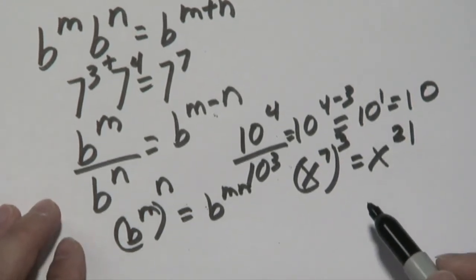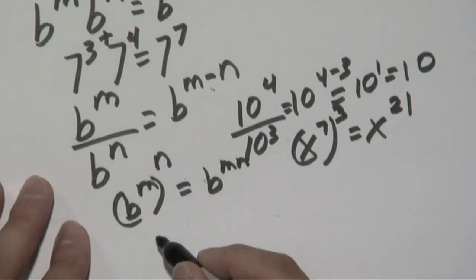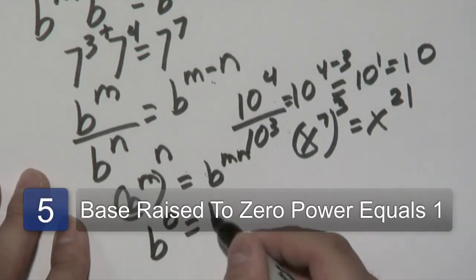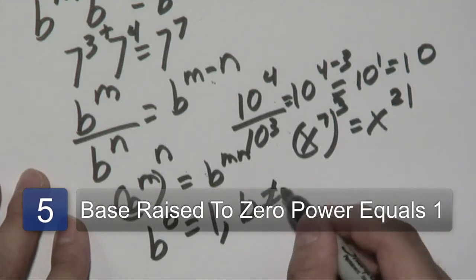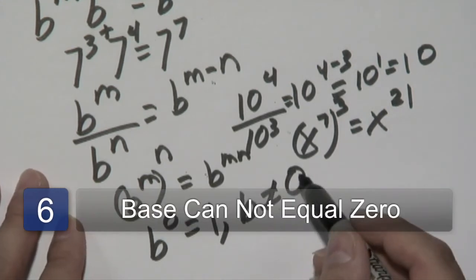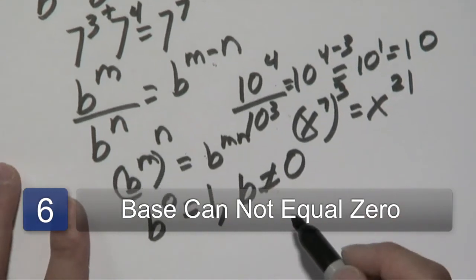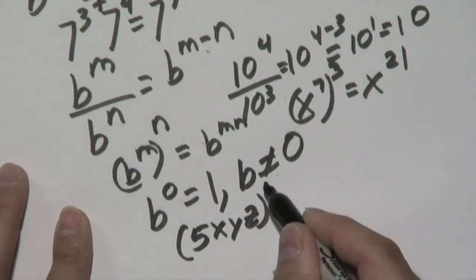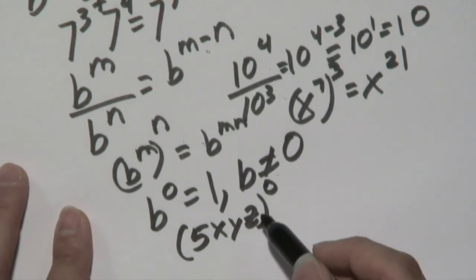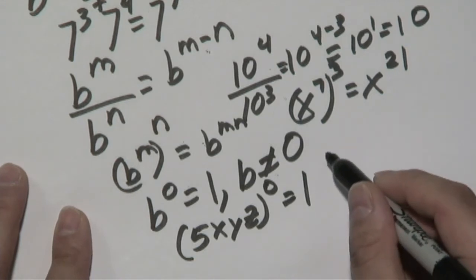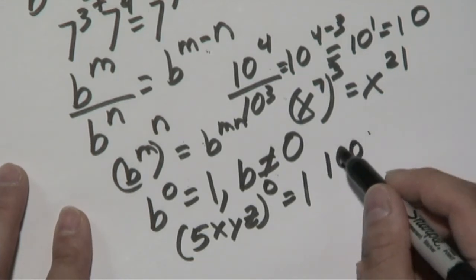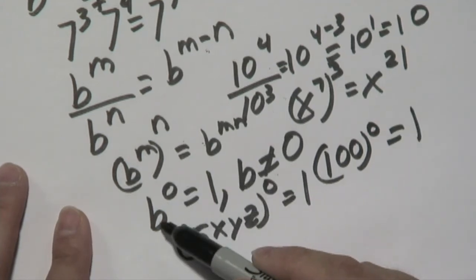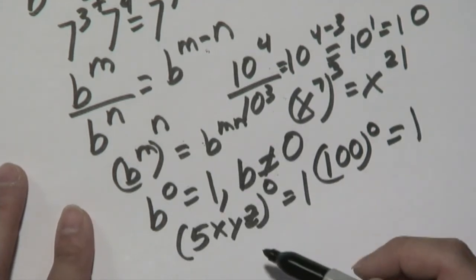Now a couple of other rules I want to go along with you here is the zero exponent rule, and that any base raised to zero power is going to give you 1. Now the only condition for that is that the base itself cannot be zero, because that's indeterminate. Now that means if you have something like 5xyz, all that to the zero power, if this is your base raised to the zero power, that's going to be 1. If you have 100 to the zero power, that's also going to give you 1. So whatever the base happens to be, as long as it's not zero, that's going to give you 1.